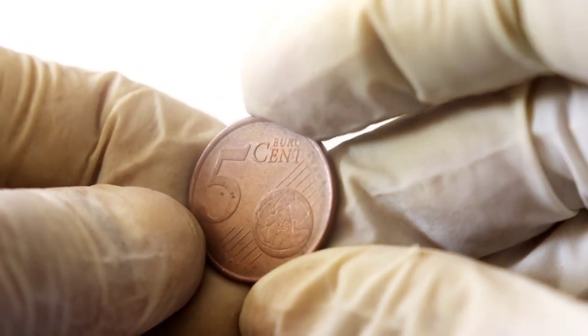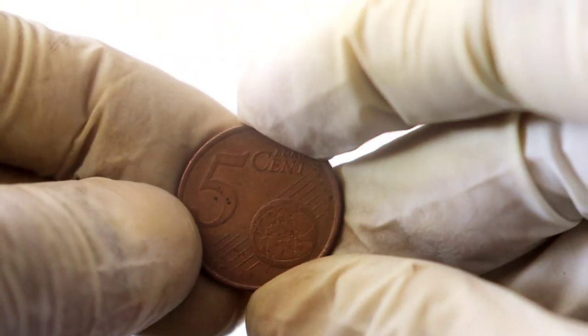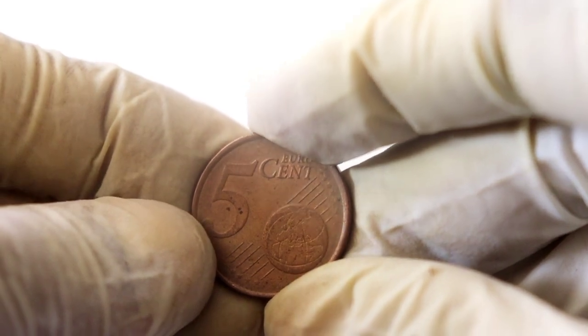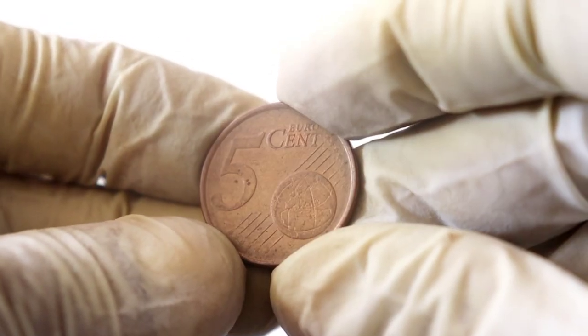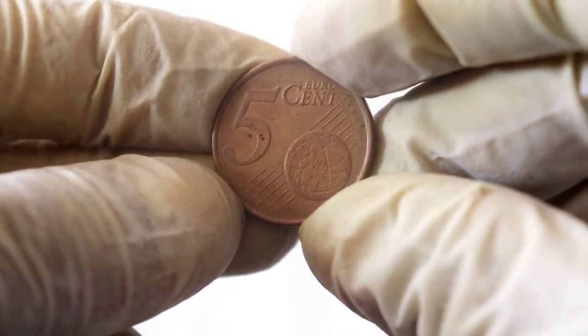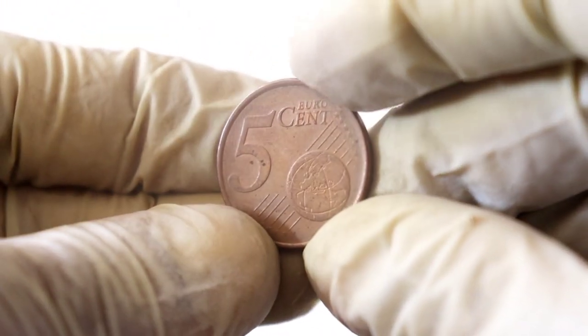Rarity plays a crucial role in determining a coin's value. Now, the 5 Eurocent 2002 coin might not be rare on its own, but some specific mint marks and variations can make it exceptionally valuable. Watch out for coins with errors or unique characteristics, as they tend to be highly sought after by collectors.